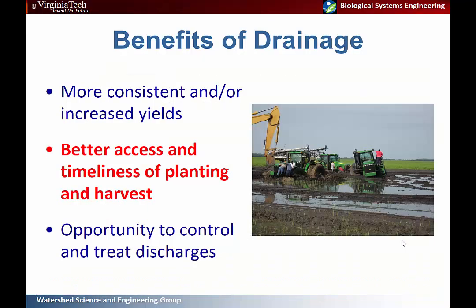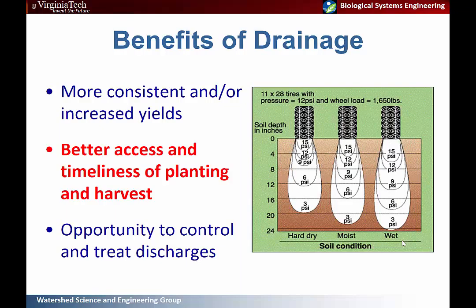Better access and timeliness of planting and harvest is very important — you don't want to be delayed getting into the field. This is especially important in our area with very wet winters and springs that can delay field access, which matters when your growing season is short. Additionally, when traffic occurs on a wet field, the higher the soil moisture content the more compaction you'll get, and the deeper that compaction will go, which is difficult to remedy.